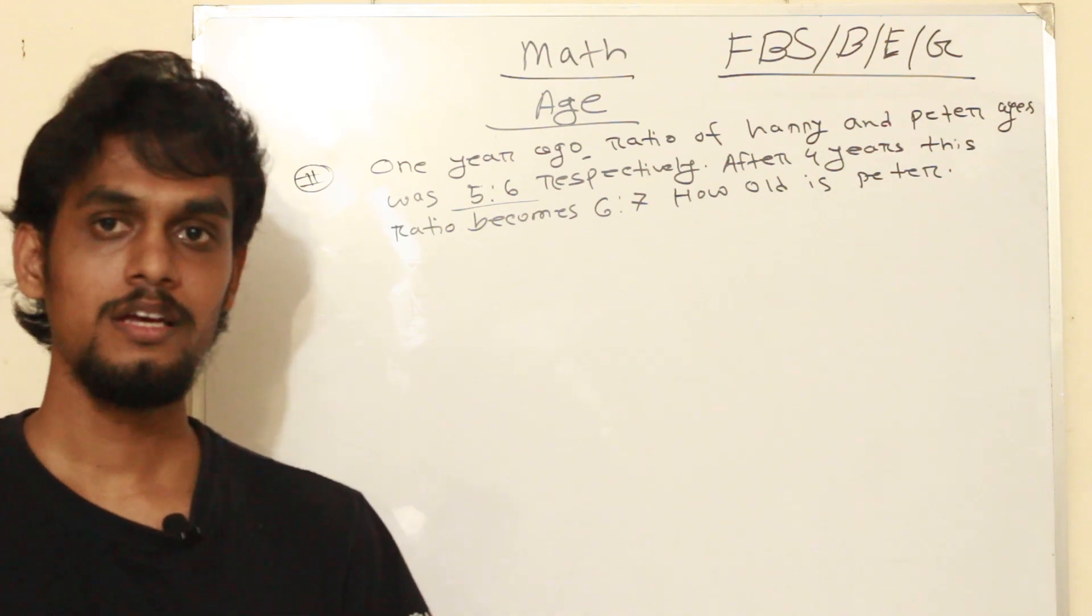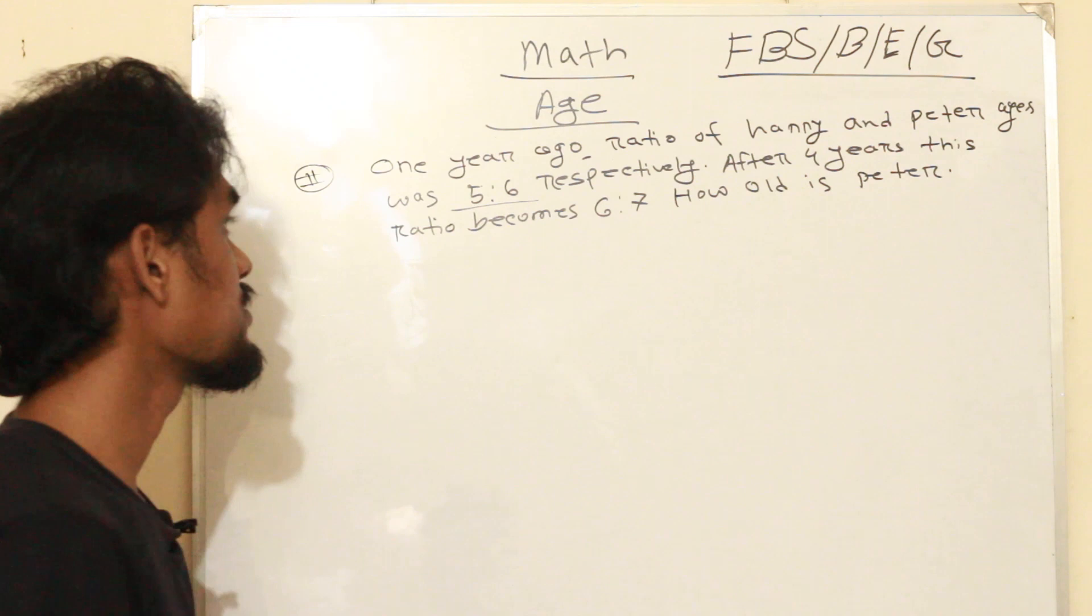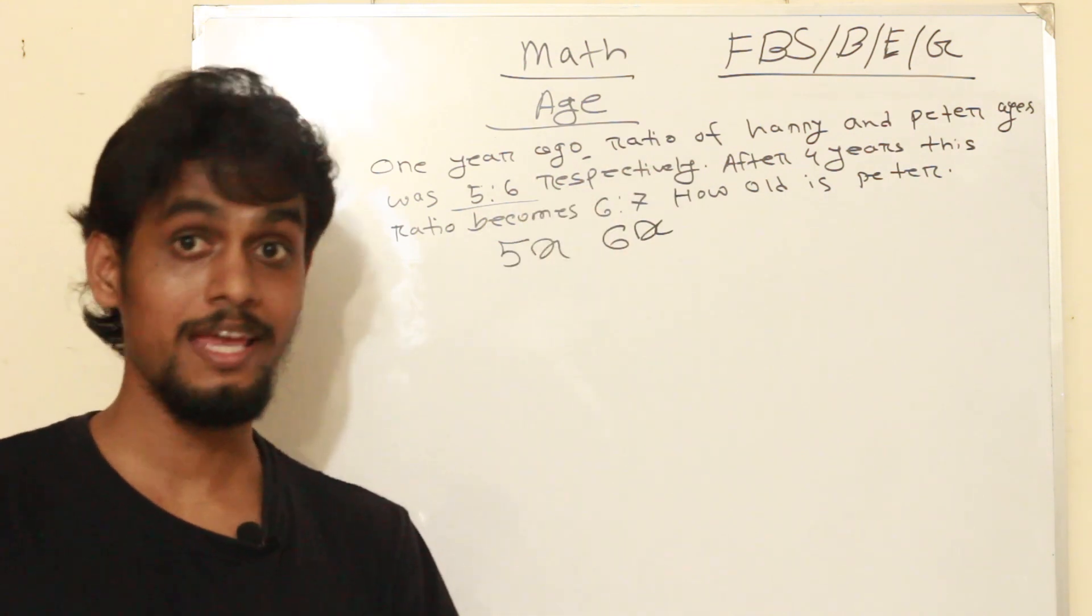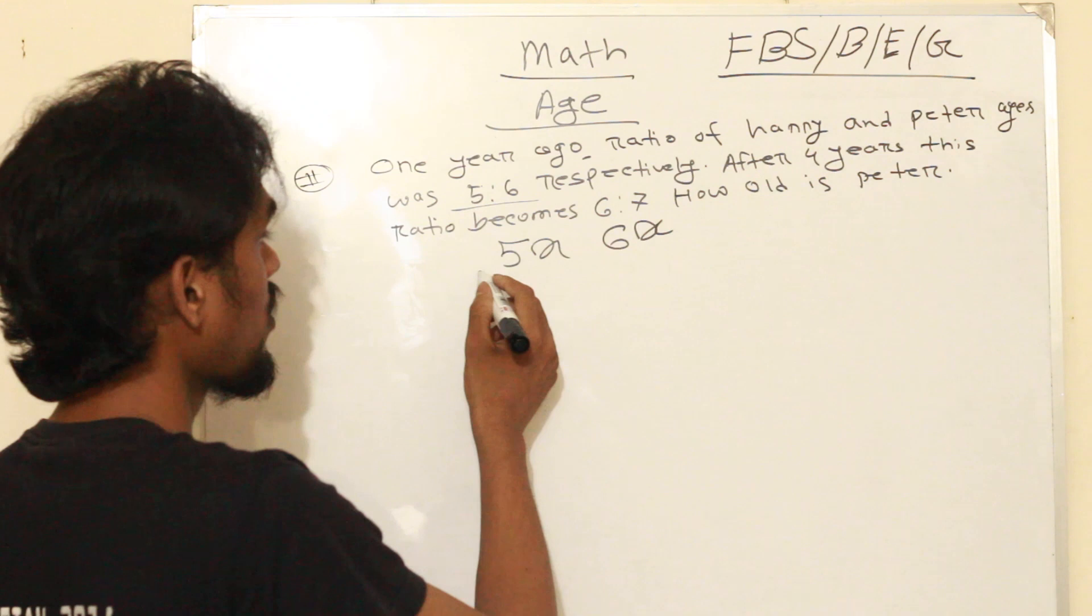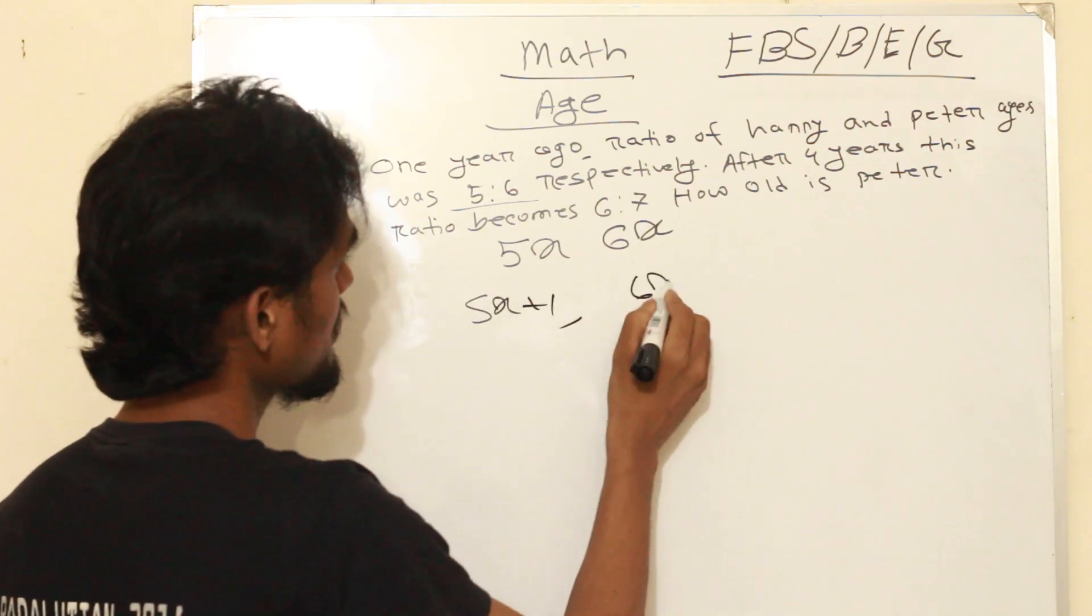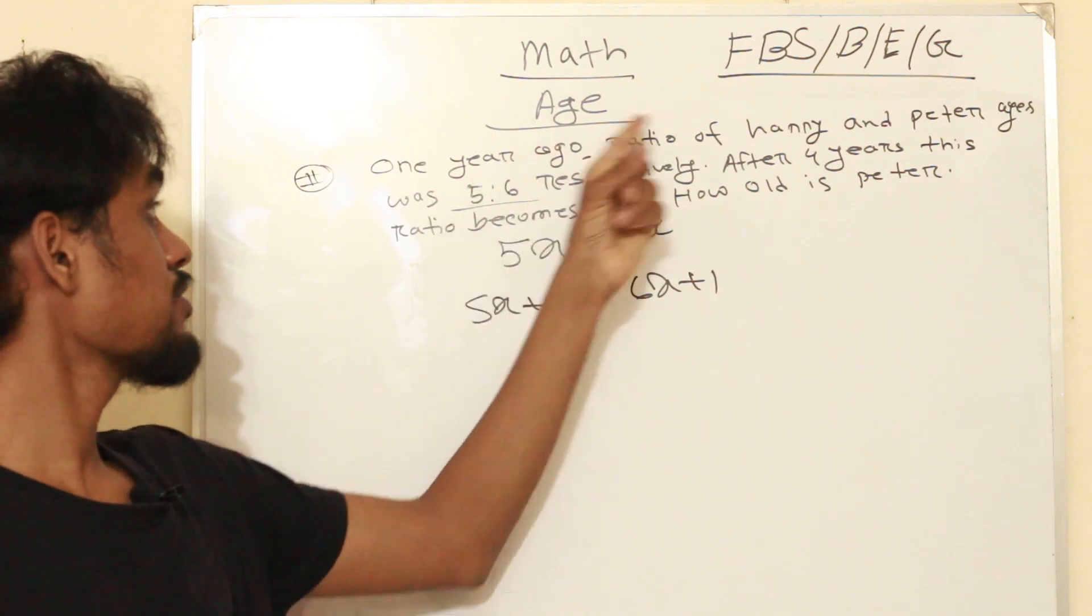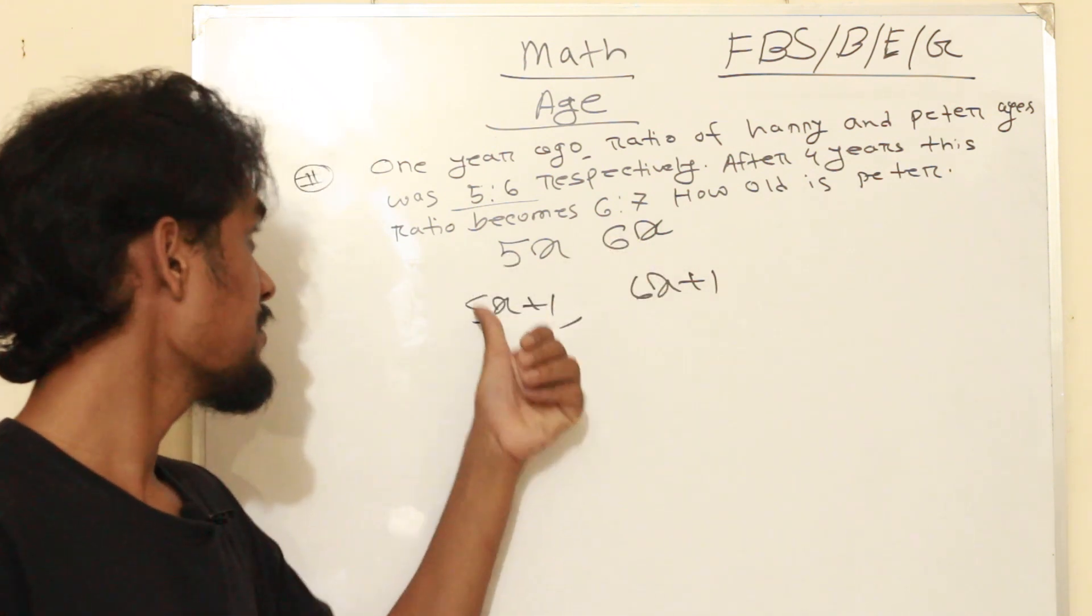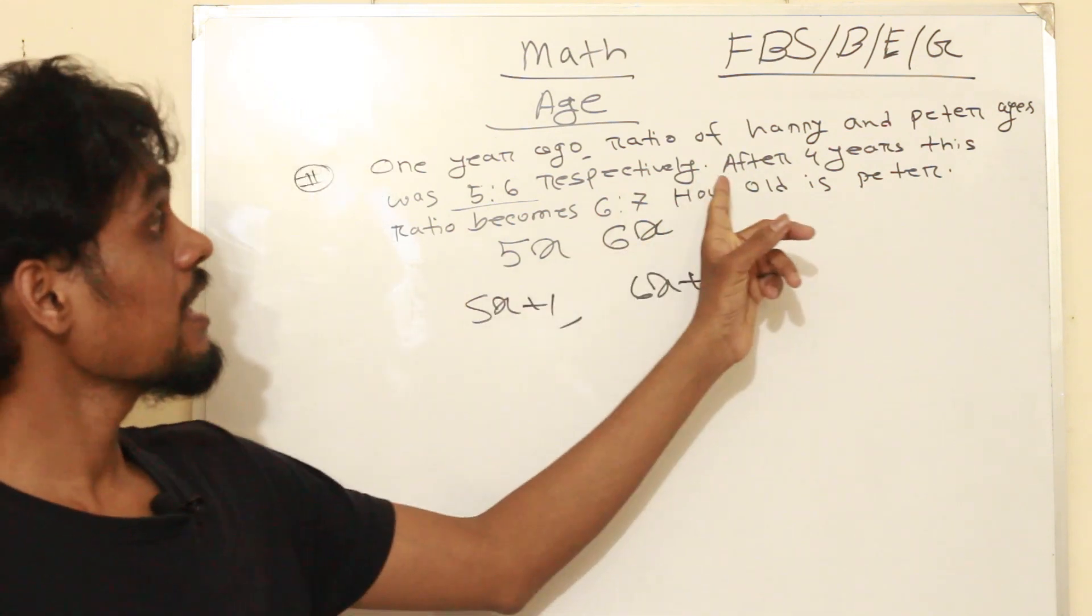So the ratio of Peter's age is 5 to 6. That means their ages were 5x and 6x one year ago. Since we want present age, we add 1. So present ages are 5x plus 1 and 6x plus 1.